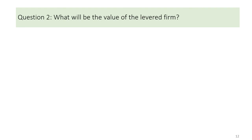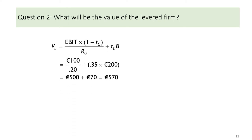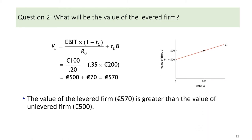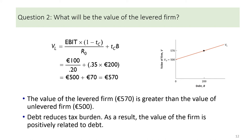Question 2: What will be the value of the levered firm? The value of the levered firm can also be calculated directly with the formula. From the results, you can see that the value of the levered firm, €570, is greater than the value of the unlevered firm. The figure on the right shows the relationship between debt and value of firm — the higher the debt, the higher the value of firm. This is because debt reduces the tax burden, and as a result, the value of the firm is positively related to debt.